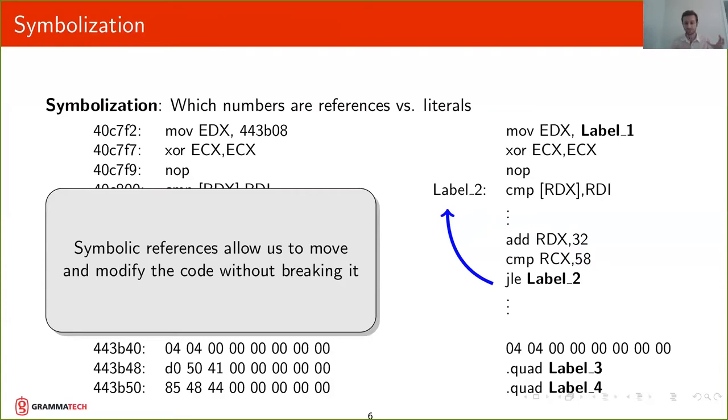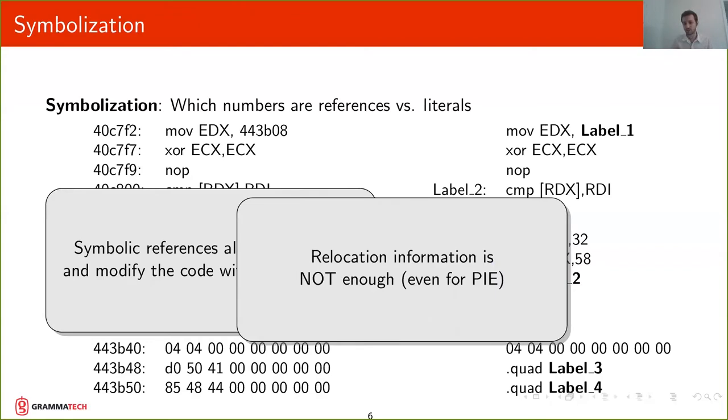that point to the correct corresponding part of the binary. So if we move and we change things in the binary we can keep those symbolic references without breaking it. One thing to mention here is that relocation information is not enough for doing symbolization, not even for position independent code.